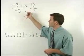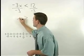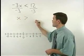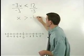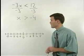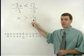On the left side, the negative 3s cancel and we're left with x. And on the right side, 12 divided by negative 3 is negative 4. So we have x is greater than negative 4.